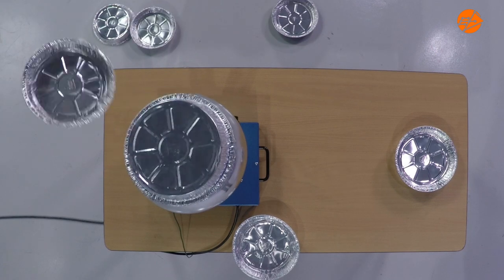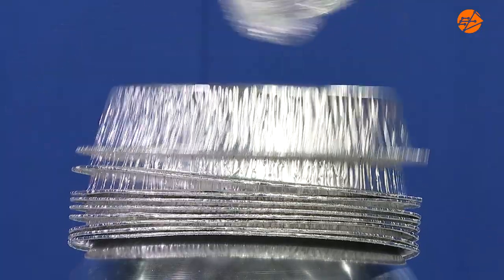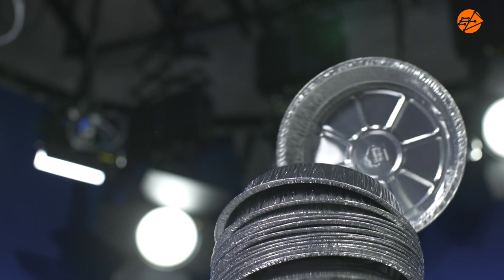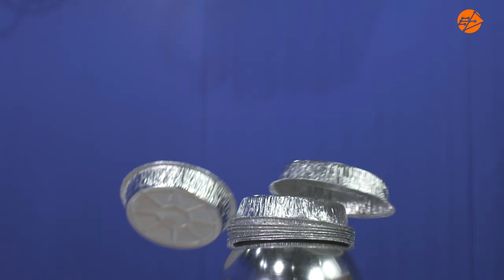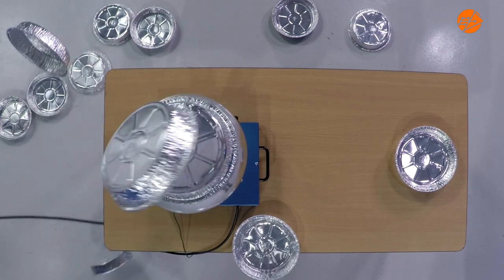Notice that the pie plates fly off and in random directions. The electrostatic forces of repulsion between the pie plates and the dome explains why the plates fly off. But why do they fly off in random directions?